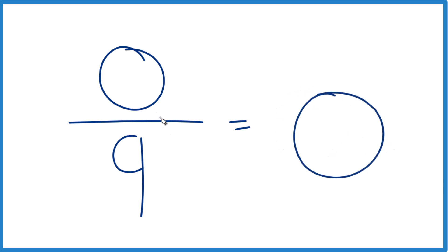Think of it this way. Say you have zero money, and you divide it among nine friends. How much money does each friend get? They don't get anything, they get zero.